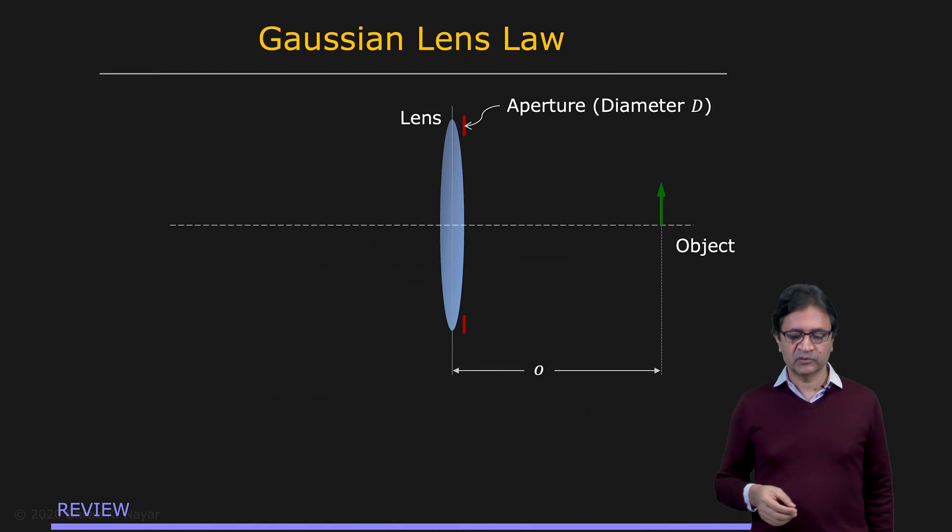We've already discussed the relationship between the location of a point in the scene and the blur circle it produces in the image. What we haven't discussed is the distribution of light within the blur circle, which is called the point spread function. Let's review some of the concepts we have discussed thus far.